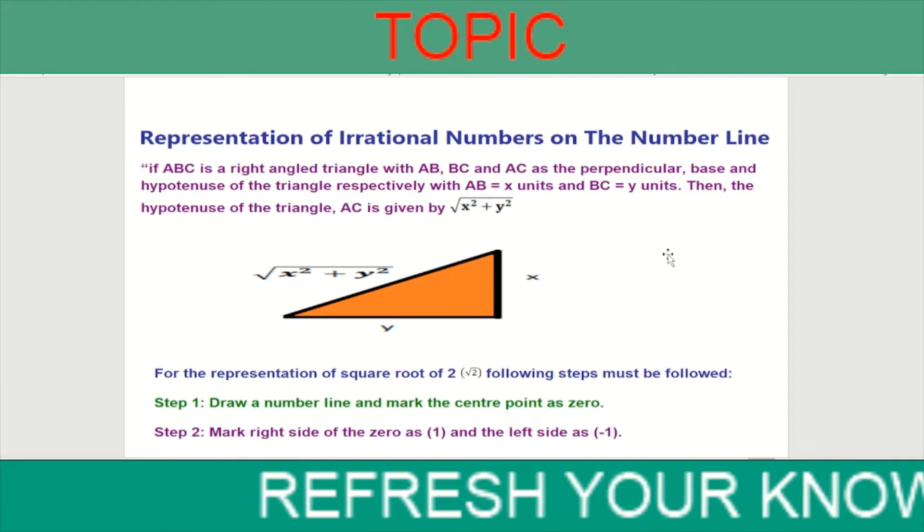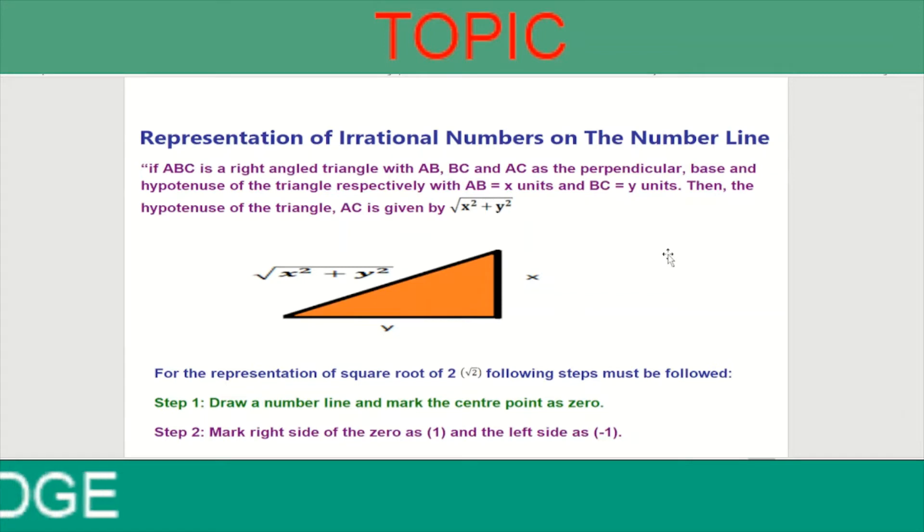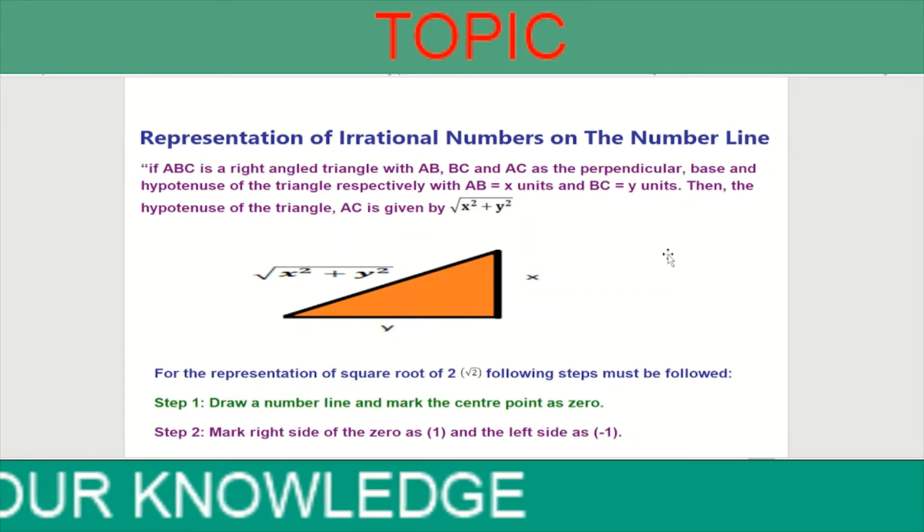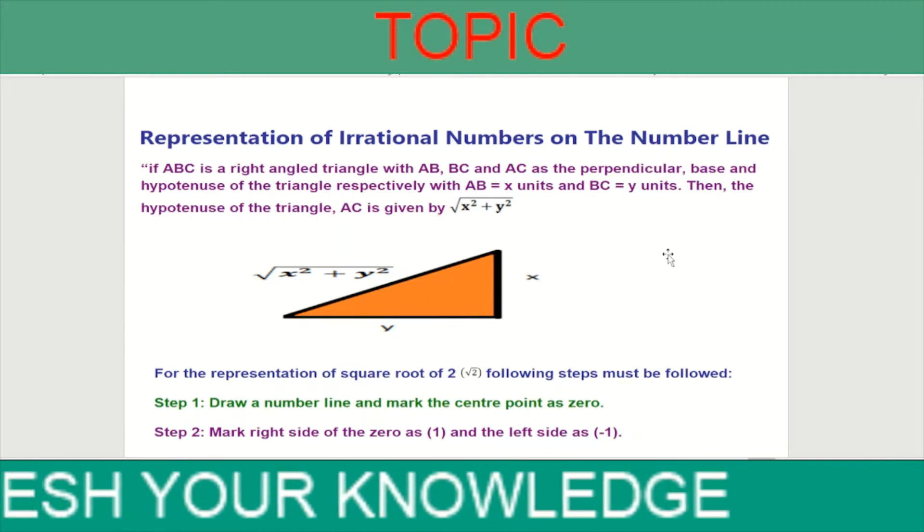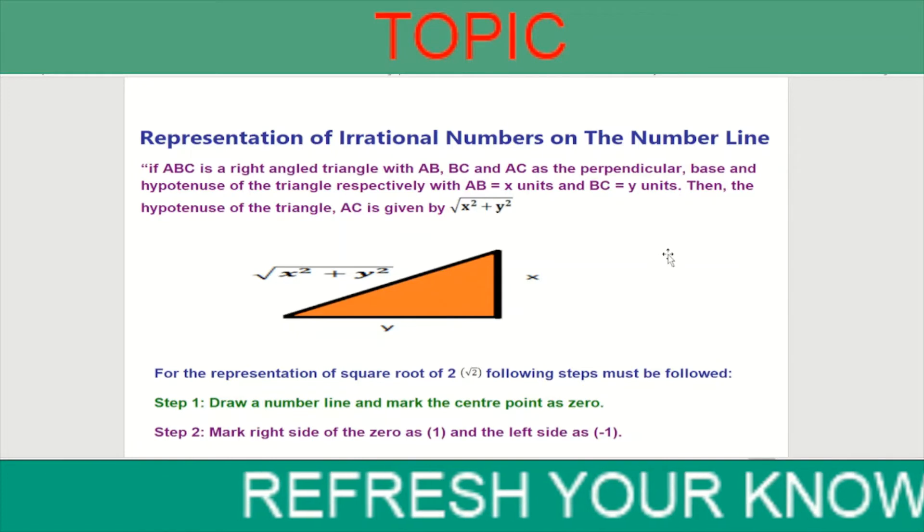With AB equal to x units and BC equal to y units, then the hypotenuse of the triangle, according to Pythagoras, that is AC, is equal to square root of x squared plus y squared.